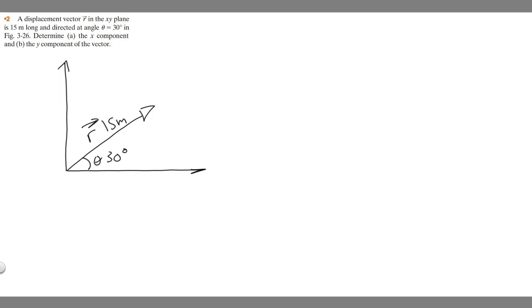So whenever I do vectors like these, I like to draw it as a triangle just because it makes it easier to understand. So if we draw this as a triangle, imagine this is going to be the hypotenuse, 15 meters. And then we draw it like this and then up like this. So it forms a triangle. You can see that.